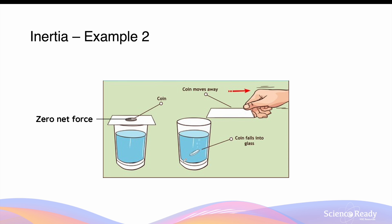A simple experiment you can do at home to demonstrate the concept of inertia is by placing a coin onto a piece of cardboard or paper on top of a glass of water. When the coin is resting on this piece of paper, it has no motion because its weight force, which is mg, is precisely balanced by the normal force acting upwards. So in the vertical direction there is zero net force, meaning no external forces are actually acting on this coin. By Newton's first law, this coin will remain at rest until another external force acts upon it.